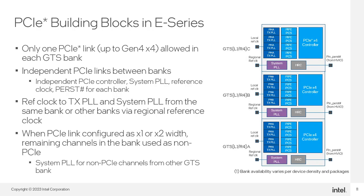In E-series devices, there is a single PCIe controller in each GTS transceiver bank, with each controller having the ability to function as a single PCIe link. This means that each GTS transceiver can, at most, implement a single physical link. So, for example, you cannot have two by-one interfaces in the same bank. If you need two by-ones or two by-twos, you must implement your design using two separate banks.